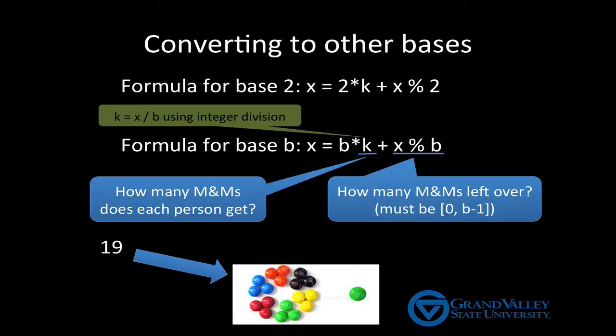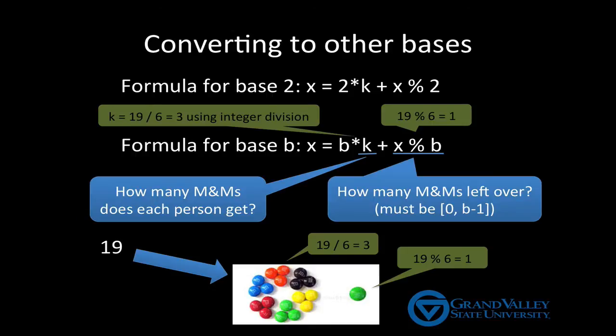So suppose you have 19 M&Ms and want to share them among 6 people. Using integer division, 19 divided by 6 is equal to 3, meaning each person gets 3 M&Ms. 19 mod 6 is equal to 1, meaning there's one M&M left over. So now let's plug this back into the formula to make sure everything works out. And you can see here that it does.